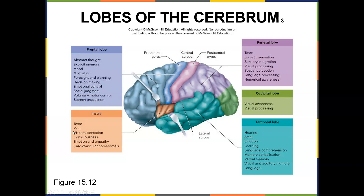A quick review of the lobes of the cerebrum from chapters 12 and 13. The frontal lobe is for abstract thought, explicit memory, mood, motivation, foresight, planning, decision-making, emotional control, social judgment, and speech production. There's the frontal lobe right here.